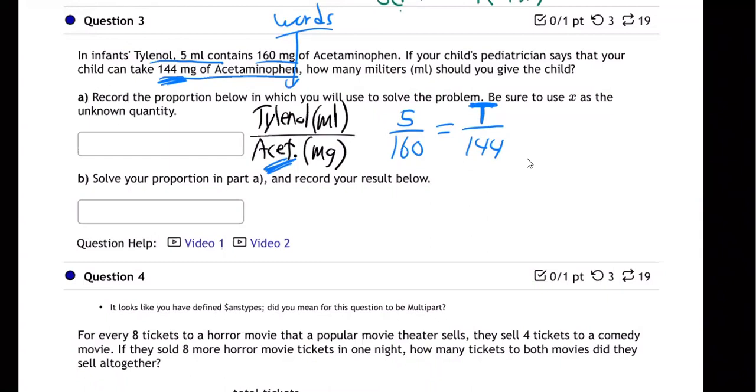We good there? Anybody see that? And then we cross multiply. Now here's a case where you see what I was talking about. We can't just look at 160 to 144. It's not clean whole numbers. So we just have to go diagonal-diagonal.